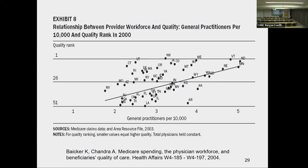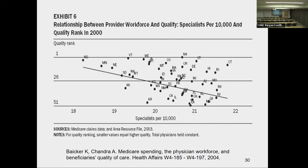Here are data showing that the more general practitioners you have across the 50 states, the better the quality of care on six chronic diseases as measured in Medicare — more generalists equals better quality of care at the system level. Data also show that as the number of specialists goes up, quality of care goes down. That obviously doesn't mean we don't need specialists — it's probably context-dependent in the U.S., where we have an imbalance. If you did this in other countries with half their workforce in primary care, you might see the opposite effect. But it speaks to the fact that generalists and specialists help each other to be better, and that we don't have the right balance in the U.S.